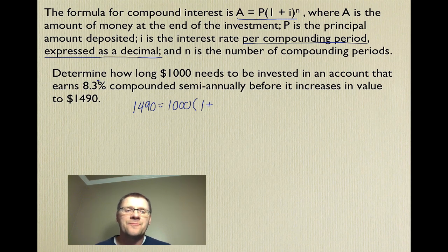But it also needs to be semi-annually. So whenever they give you a percentage, they're usually giving you the annual percent. So if you ever see ads about investing your money, they're always giving you the annual interest rate. So we need to take half of 8.3, which is 4.15. We move the decimal over two places, so it's 0.0415, raised to the power of n.